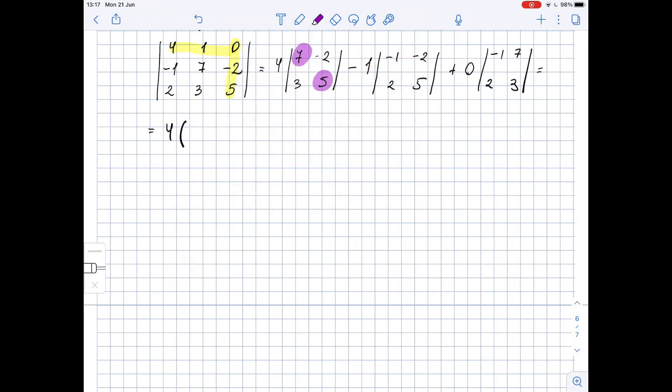So basically it's 7 times 5 minus negative 2 times 3. Then minus 1 times the same thing for this 2 by 2 matrix. Here we have negative 1 times 5 minus negative 2 times 2.